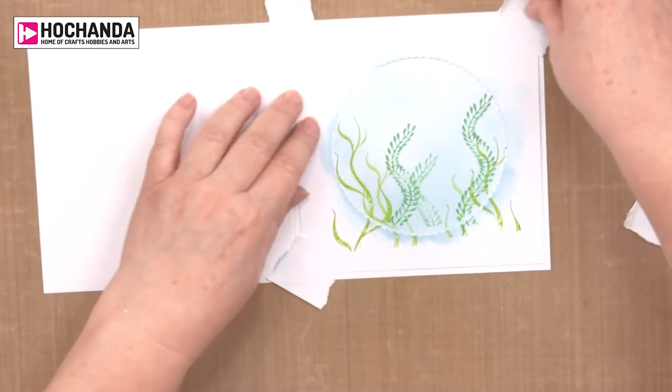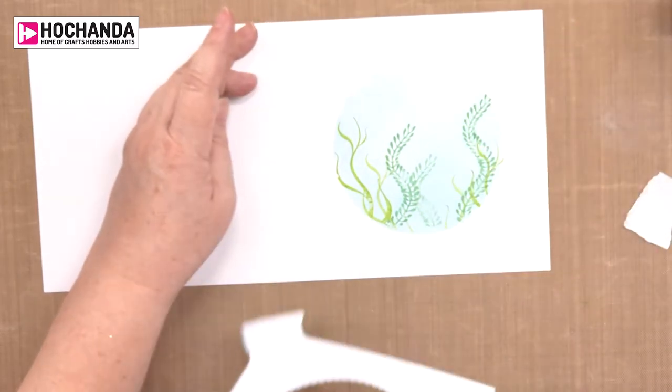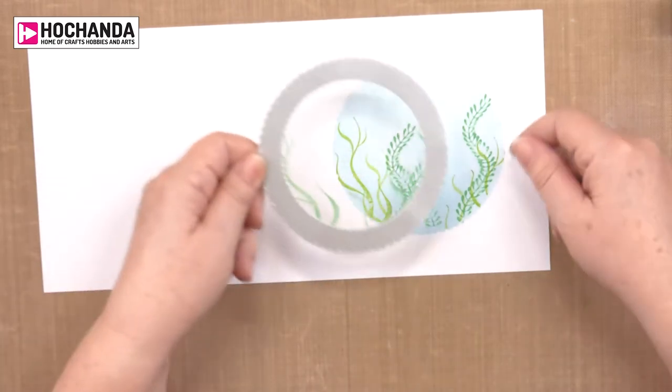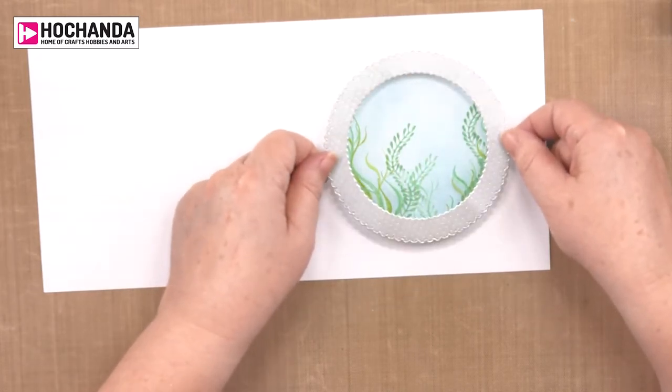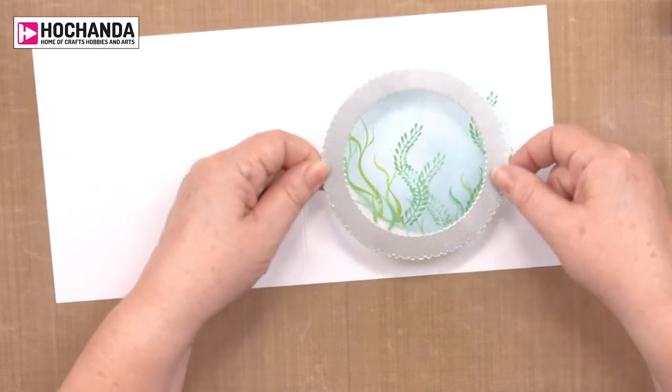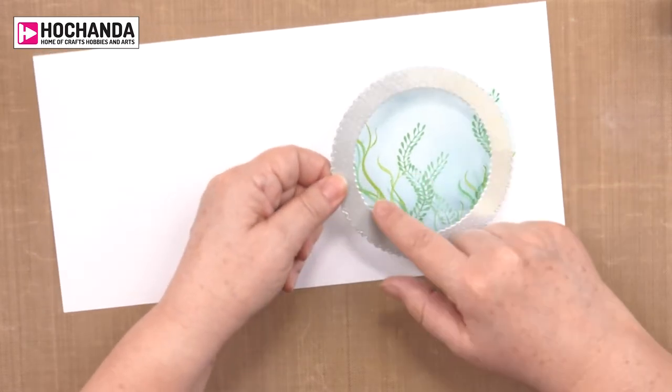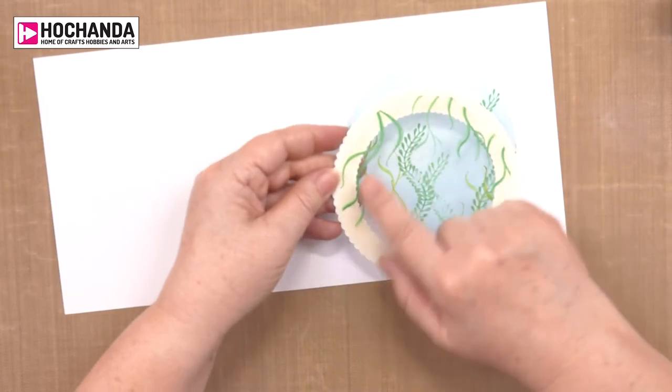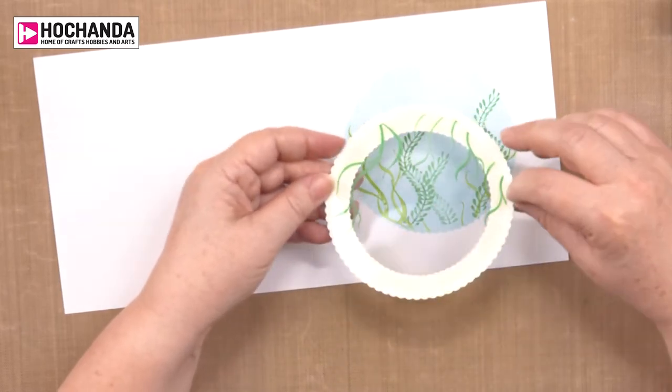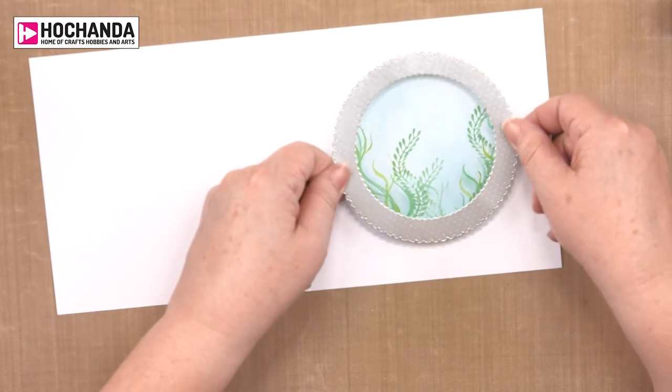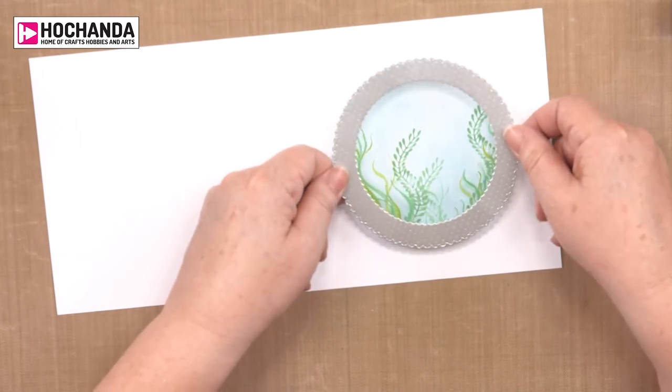If we remove our mask you can see the beginnings of what is going to be our shaker card. Using the same die but in slightly different sizes, one bigger one smaller, I've die cut this silver frame and put some acetate on the frame. On the acetate I've stamped the same seaweed with green Stazon. That's ready to go on the top once we've done our shrinking.